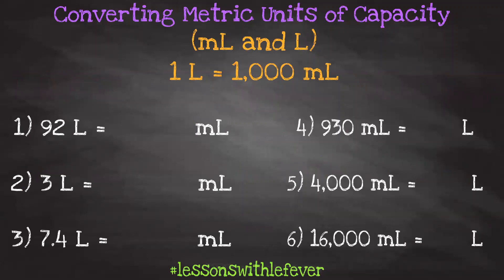Now when we're converting metric units of capacity, we only have to reference one source of information, and that is 1 liter equals 1,000 milliliters. If we reverse it, 1,000 milliliters is equivalent to 1 liter. This makes the math much easier than other conversions, because we're just working with powers of 10 — more specifically, 10 to the third power.